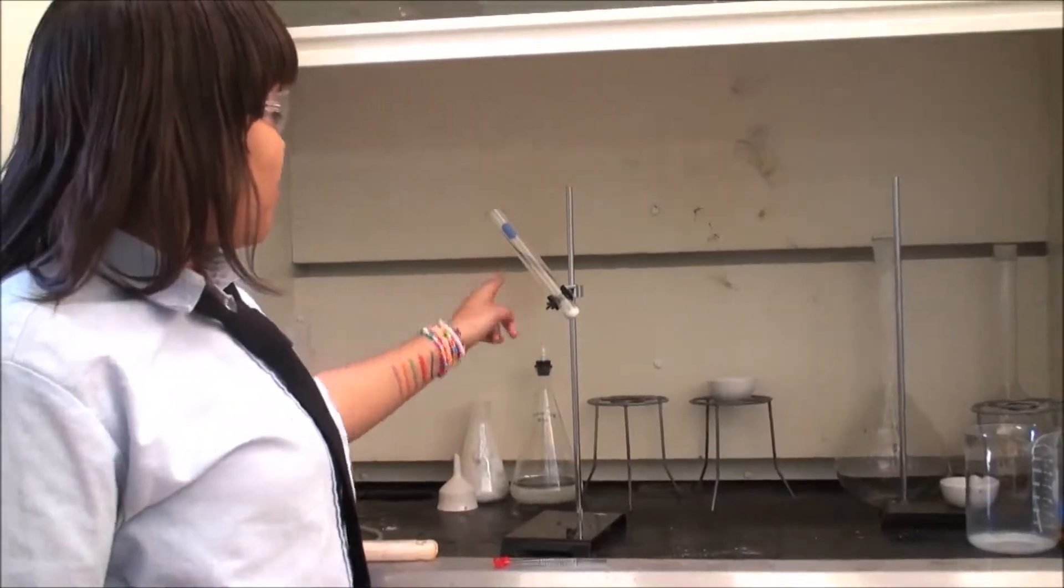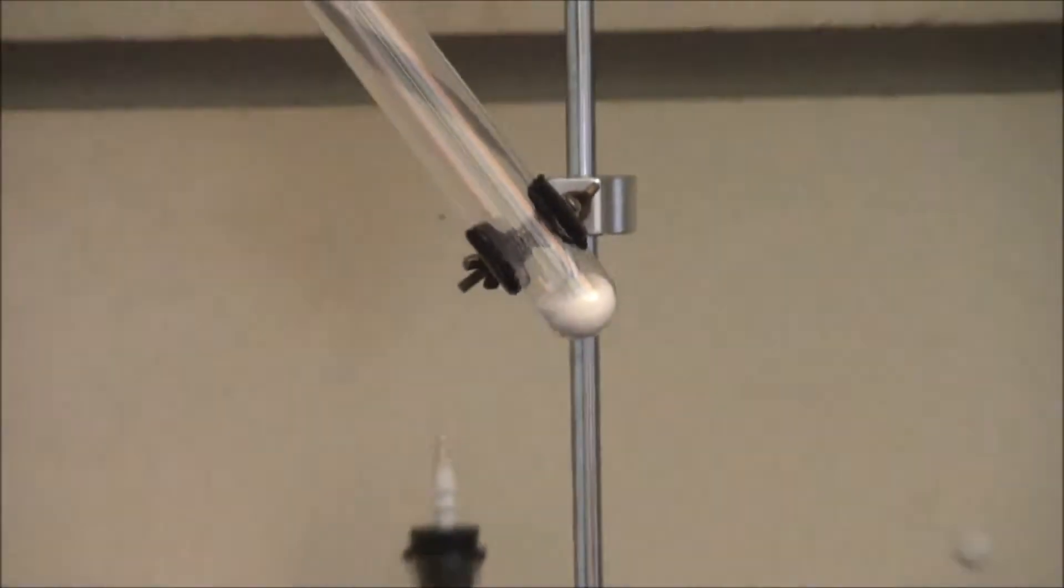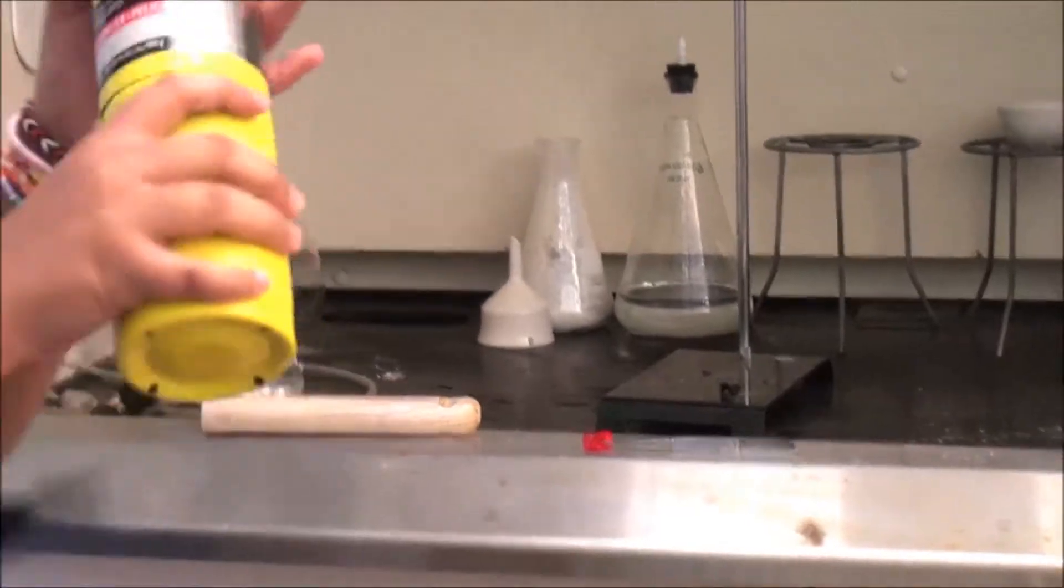So what you'll need is a tube, 5 grams of potassium chlorate, a stand, a clamp, some tongs, a gummy bear, and this burner right here.